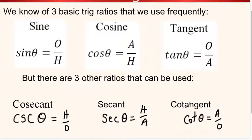These are the three reciprocal trigonometric ratios. Cosecant is the reciprocal of sine, secant is the reciprocal of cosine, and cotangent is the reciprocal of tangent.